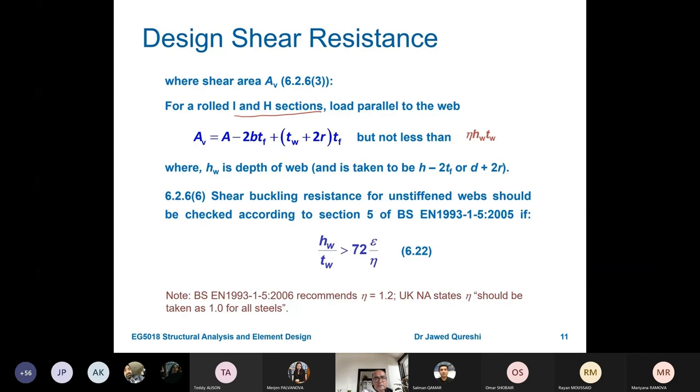A_V is shear area. In our case, for I and H sections, this is simply area of web. So our assumption is that entire shear is taken by web.